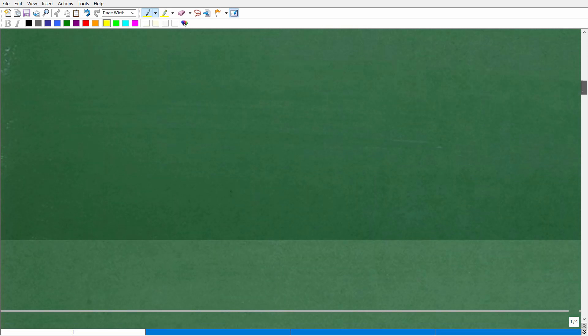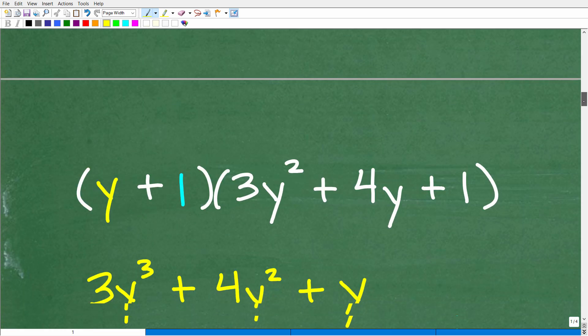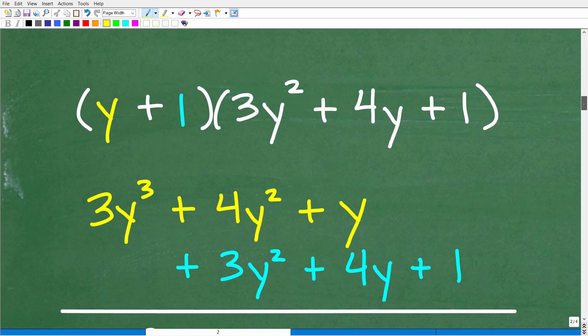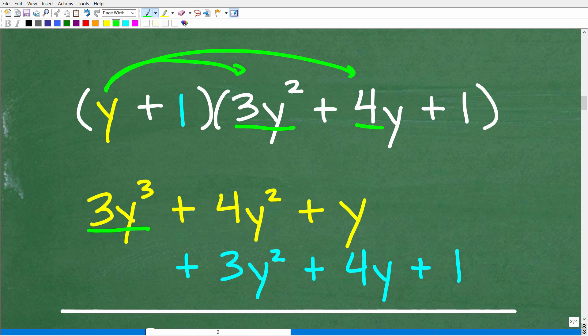All right, so a pretty straightforward problem. So we're going to start with this y, right? So we have a binomial times a trinomial. So we're going to take this y, and we're going to multiply it by 3y squared. So y times 3y squared is 3y cubed. Now we have y times 4y. That is 4y squared. And then y times 1 is y.